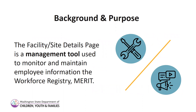The Facility Site Details page is a management tool used to monitor and maintain employee and household member information in Merit. To request access to this tool, an owner, director, or family home child care licensee completes a Facility Site Registration Application in Merit. It's important to note that the individual completing the application must be listed as the primary contact for the facility and site in FAMLINK. Primary contact information is managed in FAMLINK by an assigned licensor. All personal information for the primary contact in FAMLINK and Merit must match, or else the system will not allow you to submit the application.